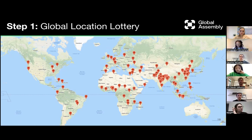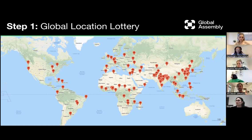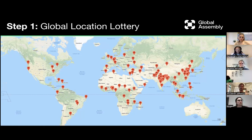This process ensured we picked random geographic locations weighted based on population distribution across Earth. We also built algorithms to ensure no modern nation state was overrepresented. For example, the United States has about 4.5% of global population, so we ensured the algorithm selected no more than five geographic locations within the US — rounding up to the nearest integer. We were working with 100 people and wanted to make sure no nation state was overly represented.